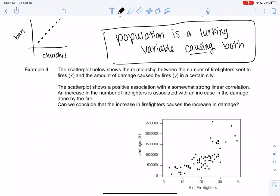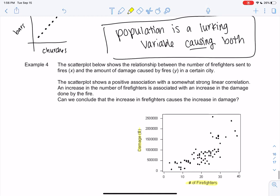I have a scatter plot below, and we have the number of firefighters sent to a fire, and then we have damage. And if I look at this, and if you don't critically think about it, you're like, wow, the firefighters are causing more damage. But let's talk about that. There's a positive association or correlation with a somewhat strong linear correlation. There's definitely somewhat of a line there.